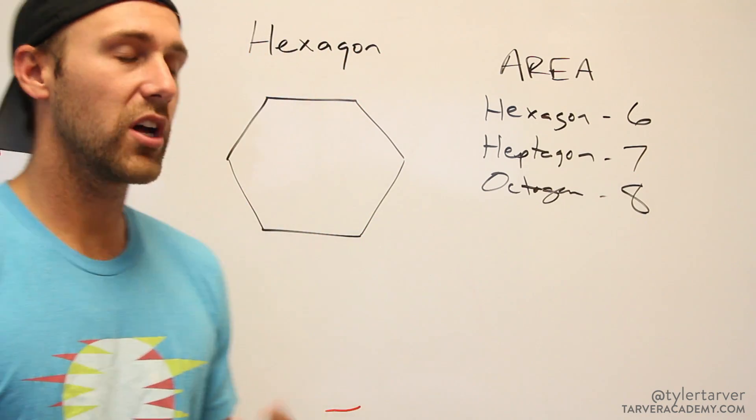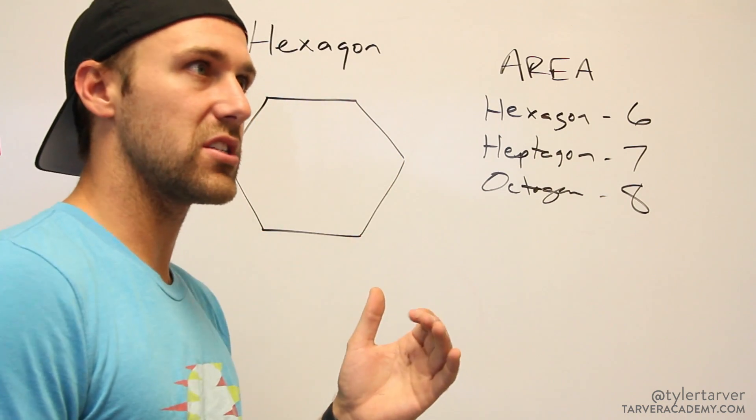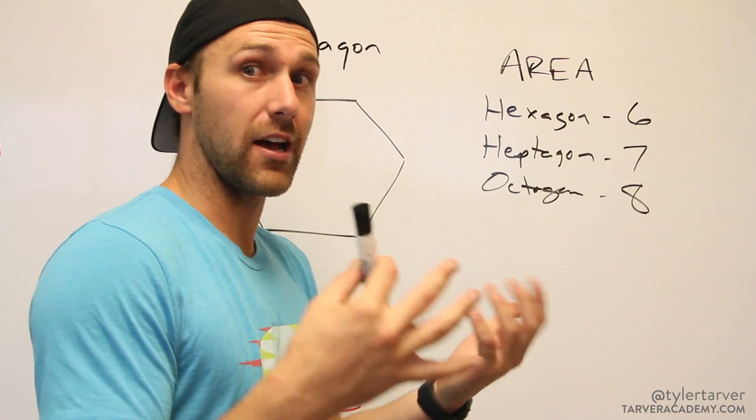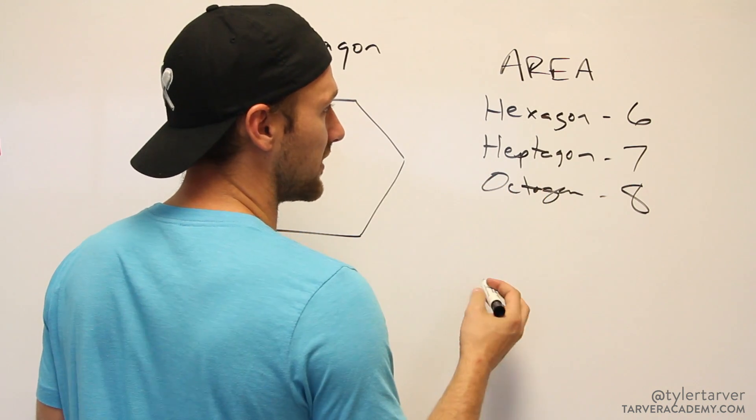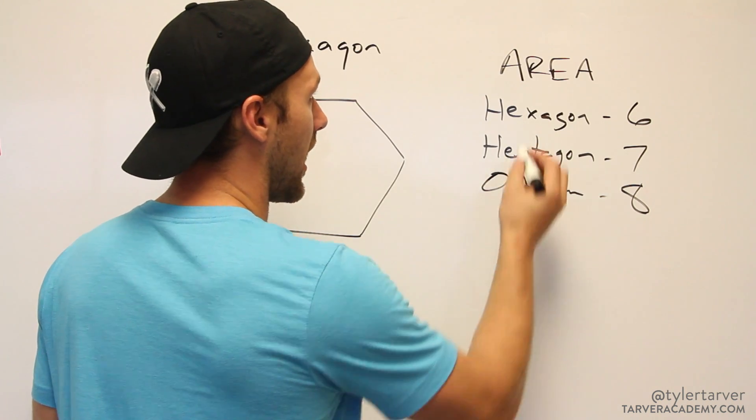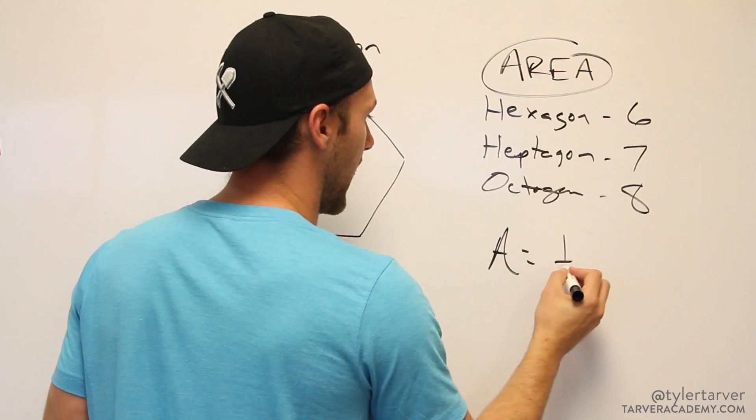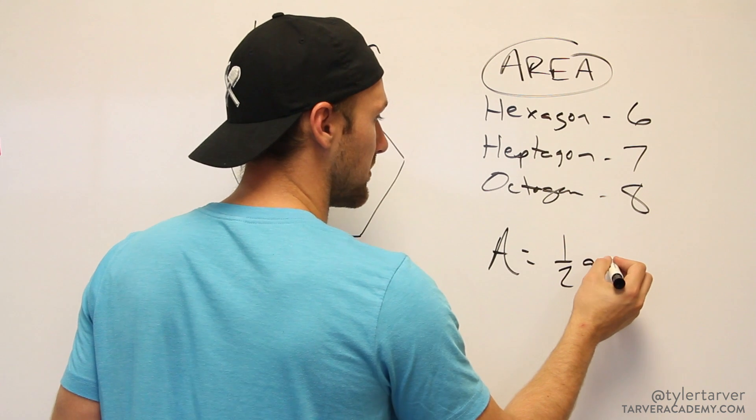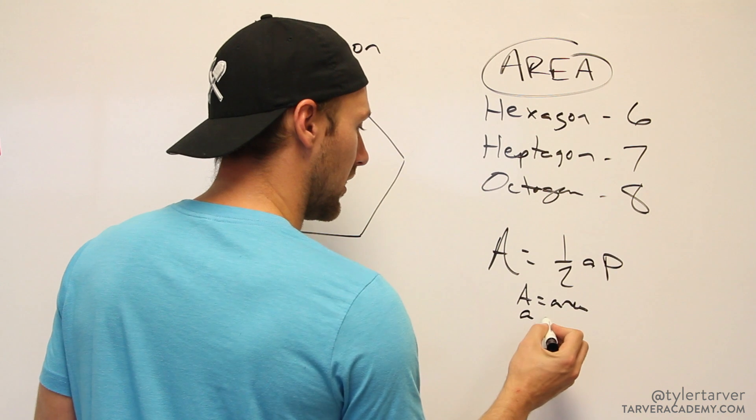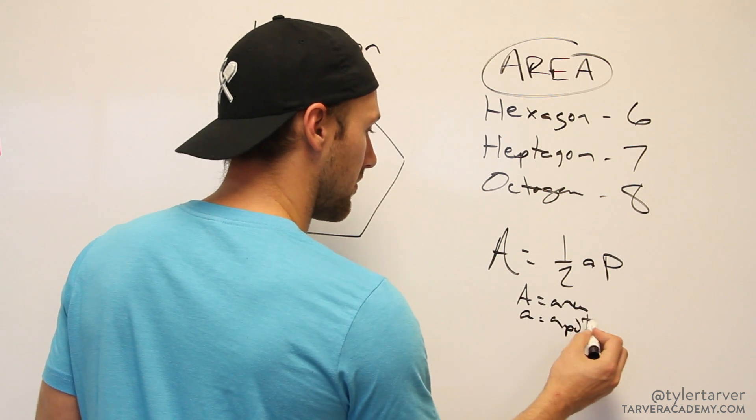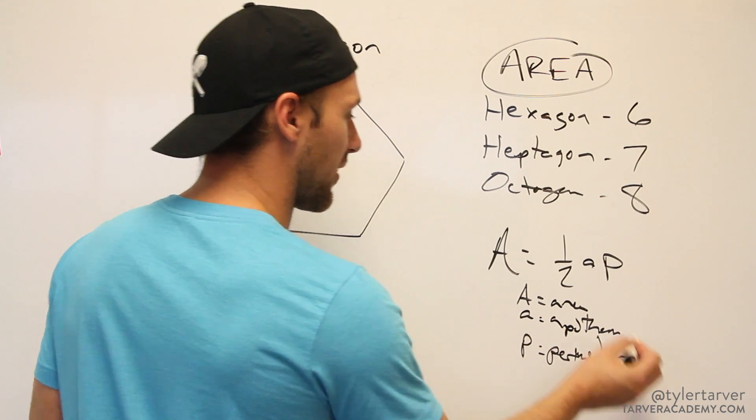We're gonna use the same formula for all three of these. The formula for area of all three is: area equals one-half the apothem times the perimeter. Big A is area, little a is apothem, and P is perimeter.